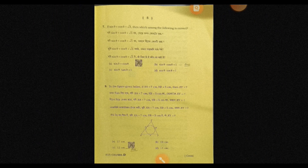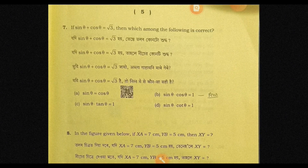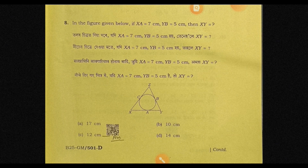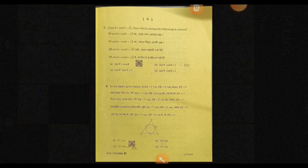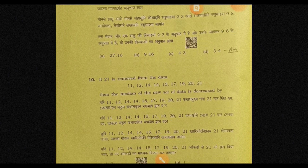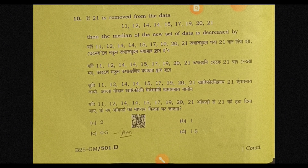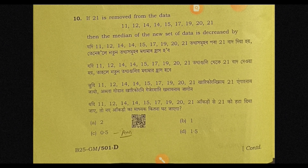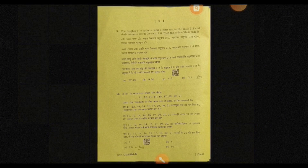Question number 6, option B — diameter of the circle. Question number 7, option B — sine equals 1. Question number 8, option C — 12 cm. Question number 9, option D — ratio 4.